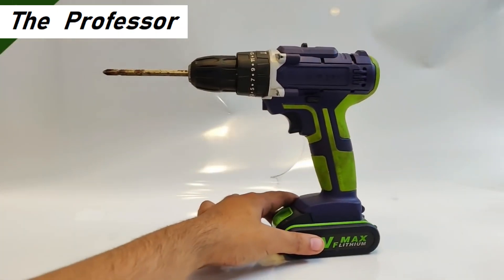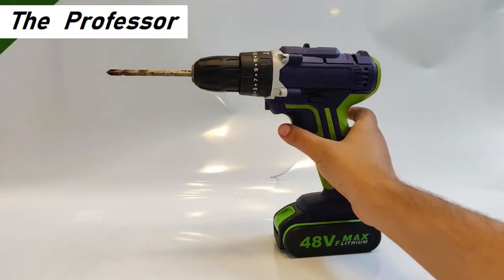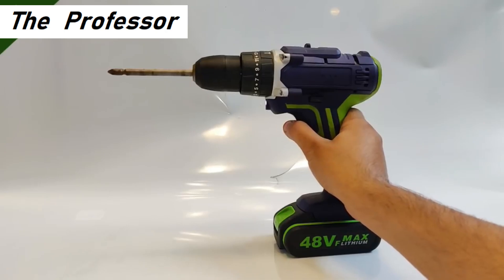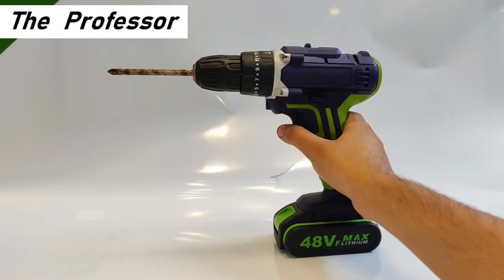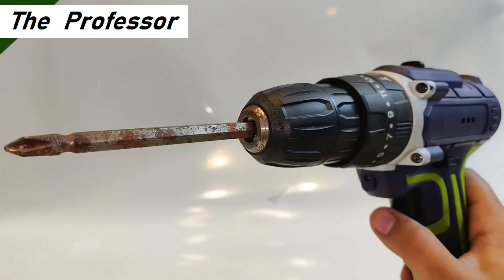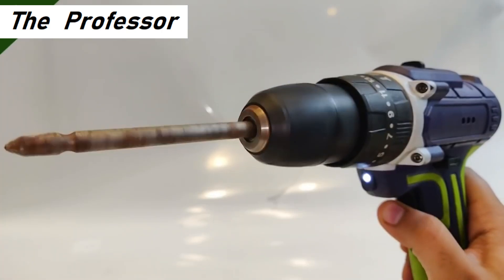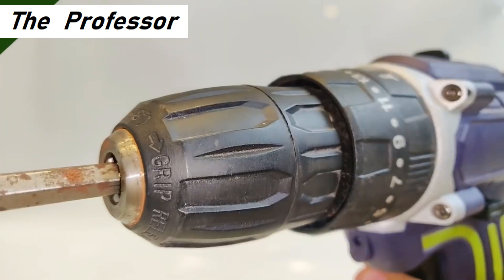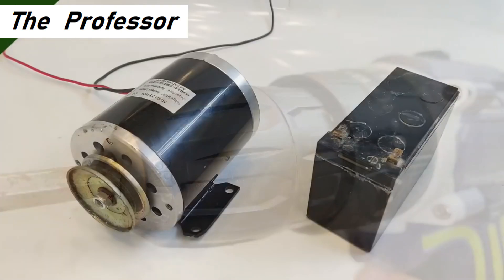You might have seen the instantaneous dead stop function in many of the cordless drill machines and electric screwdrivers. So today in this video I'm going to teach you how it occurs in the cordless drill machine or electric screwdriver and how you can also do it at home. And it's very easy.